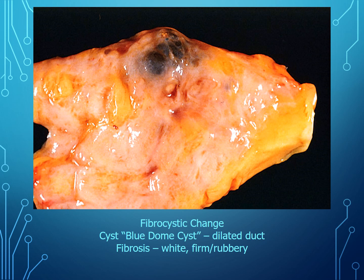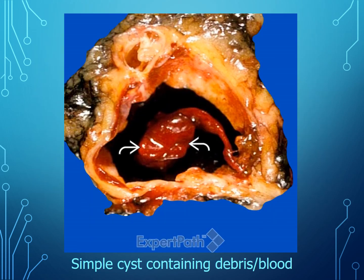This is a gross photograph of the breast with fibrocystic change. You see what we call a blue dome cyst — basically a dilated duct with fibrosis around it. This is one type of fibrocystic change. Here is another example: a simple cyst that has ruptured, containing some debris and blood. This would also be considered part of non-proliferative changes to the breast.